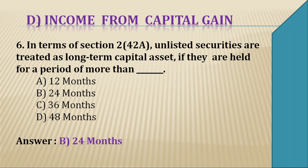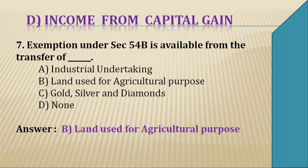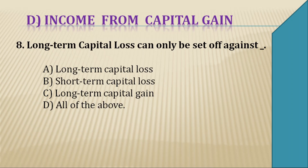Question 7: Exemption under section 54B is available from the transfer of — A — an industrial undertaking, B — land used for agricultural purpose, C — gold, silver and diamonds. The exemption under section 54B is available for land used for agricultural purpose. So our right answer is B — land used for agriculture.